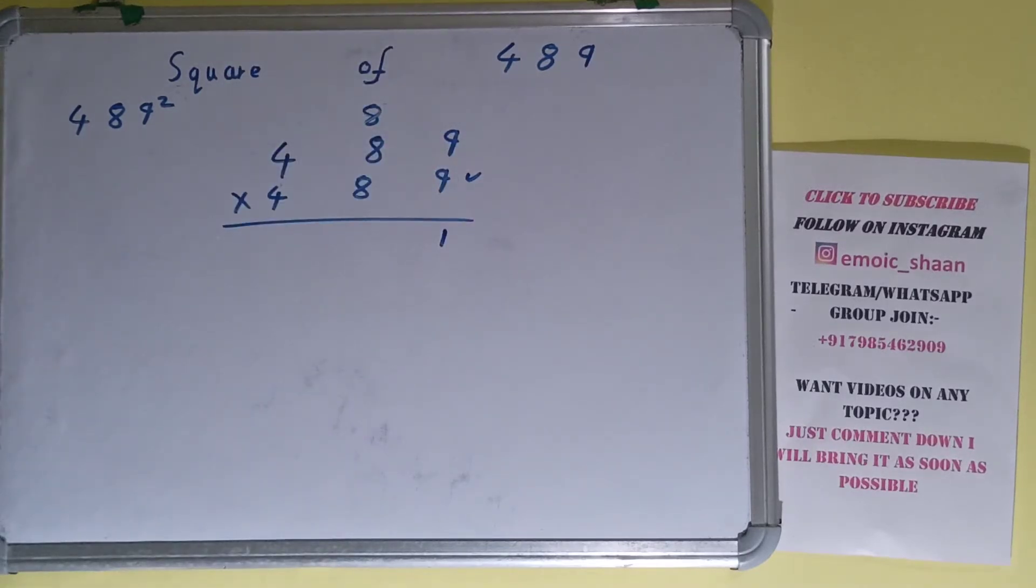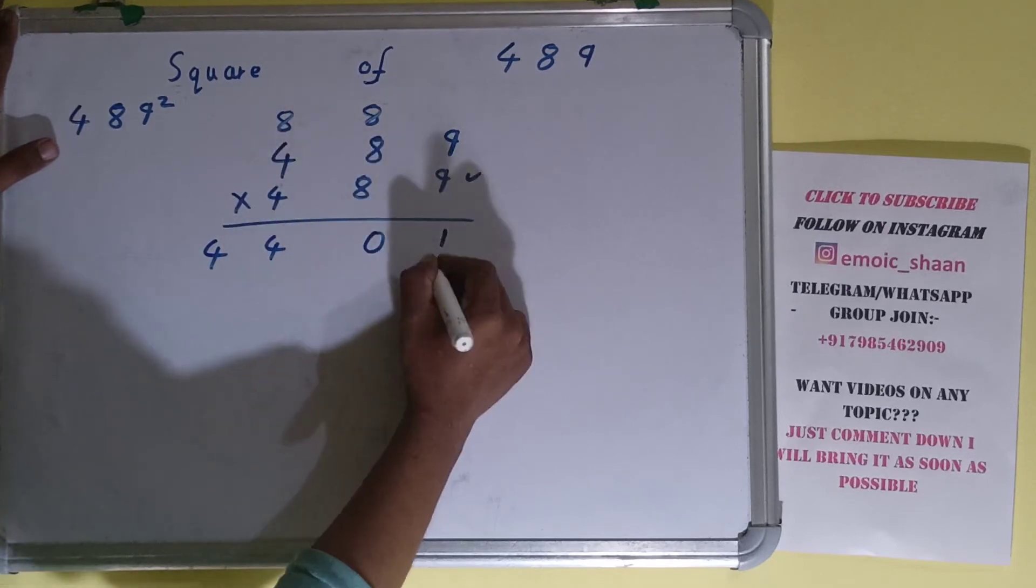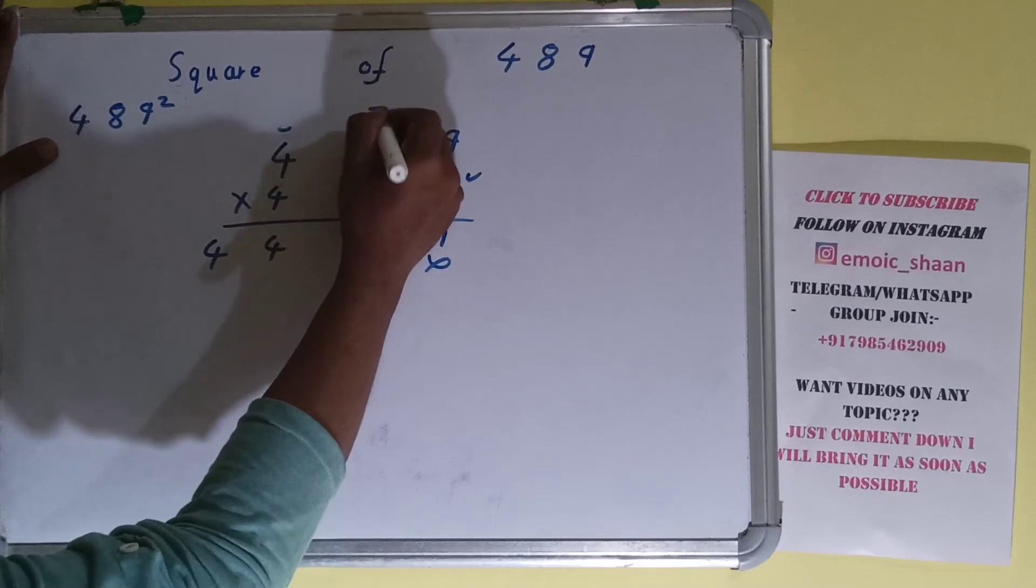This 8: 8 times 9 is 72, 7 carry. 8 times 8 is 64 plus 7 is 71, 7 carry. 8 times 4 is 32 plus 7 is 39.